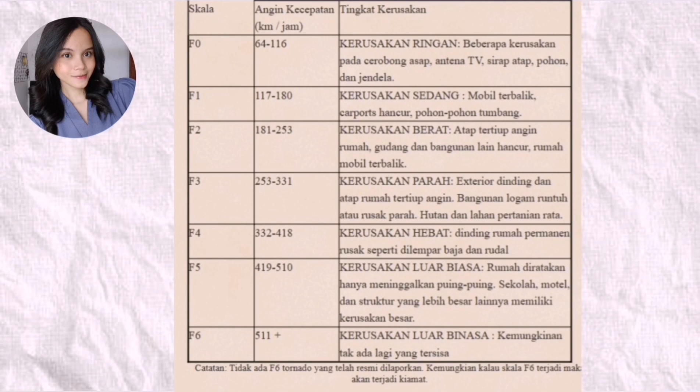F3 scale with wind speeds of 253 to 331 km/h has devastating damage. F4 scale with wind speeds of 332 to 418 km/h has incredible damage. F5 scale with wind speeds of 418 to 510 km/h has catastrophic damage. And F6 scale with wind speeds exceeding 511 km/h has unimaginable damage.